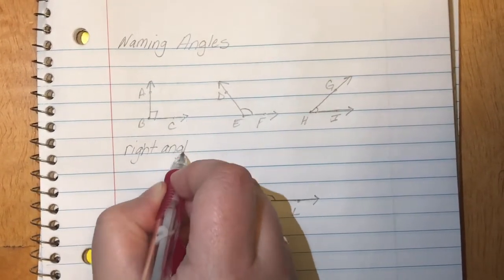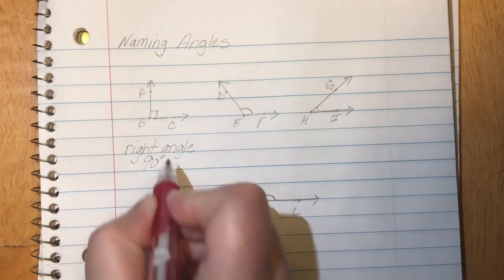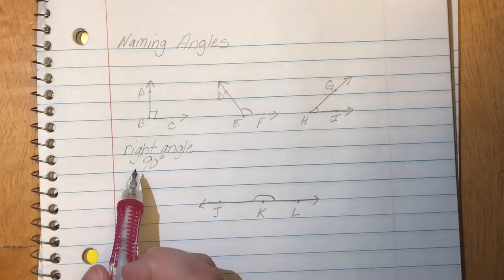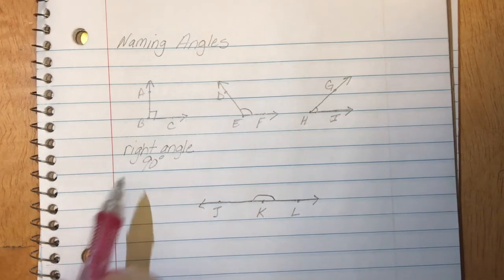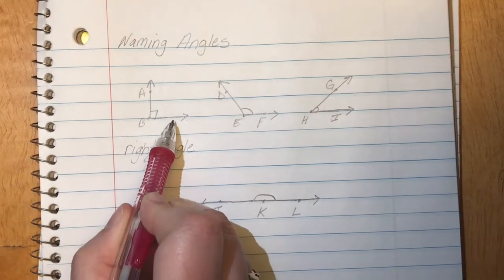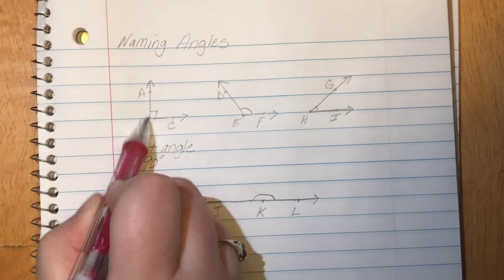Now right angles are 90 degrees when we measure them with a protractor and when we tell what the name of this angle is, this is angle ABC or we can call this angle CBA.